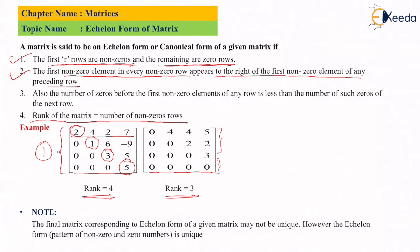As per point 2, the first non-zero elements are 2, 1, 3, and 5. These elements appear to the right of the first non-zero element of any preceding row. In the second row, element 1 is to the right of element 2 in row 1. In the third row, element 3 is to the right of element 1, and element 5 is to the right of element 3. Similarly in the second matrix, the first non-zero element is 4, then 2 (to the right of 4), then 3 (to the right of 2). This is a mandatory condition.